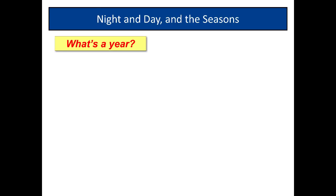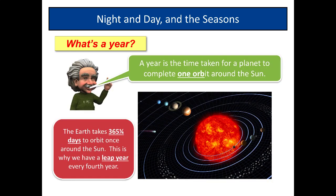Now let's start with a very basic question: what's a year? A year is the time taken for a planet to complete one orbit of the Sun. So a year is the time taken for a planet like the Earth to complete one orbit completely around the Sun.